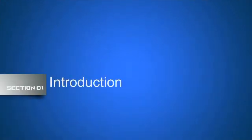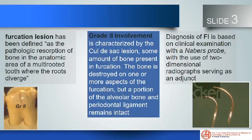Introduction. Furcation involvement has been defined as the pathologic resorption of bone in the anatomic area of a multi-rooted tooth where the roots diverge. Grade 2 involvement is characterized by the cool defect with some amount of bone present in the furcation. The bone is destroyed on one or more aspects of the furcation, but a portion of the alveolar bone and periodontal ligament remains intact. The analysis of furcation involvement is based on clinical examination with Nabers' probe with the use of two-dimensional radiograph serving as an adjunct.